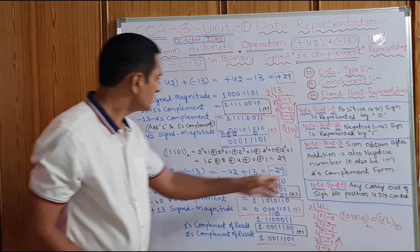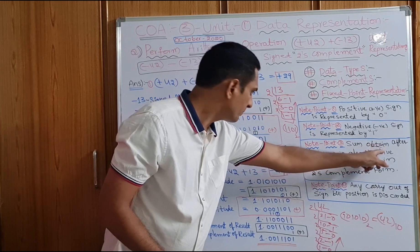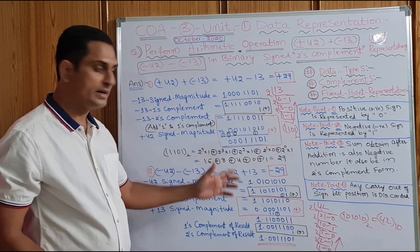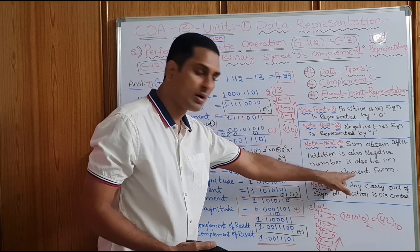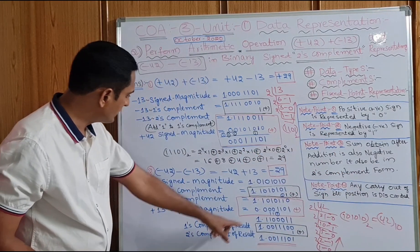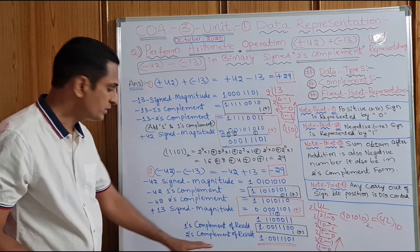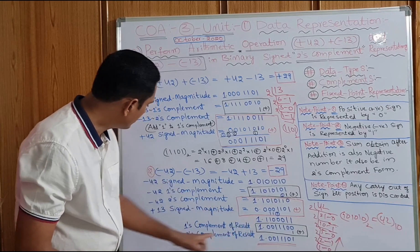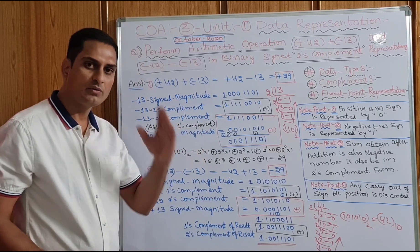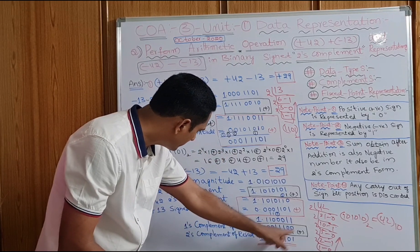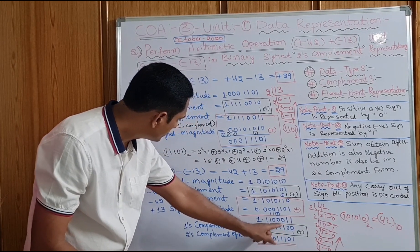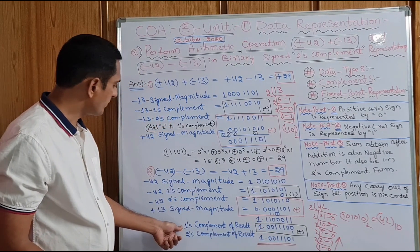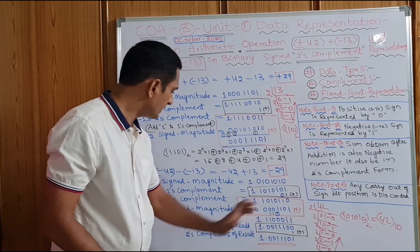There is a twist here. What is the note point? The sum obtained after addition is also negative — we got negative minus 29. If the sum obtained is also a negative number, that will be in 2's complement. So we need to change it. This is the result — we need to change it into 1's complement, then into 2's complement, and that is the final result.